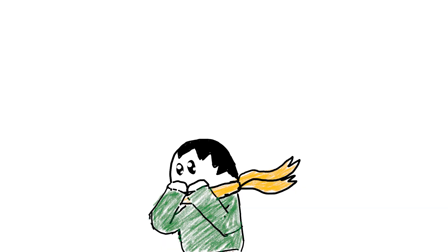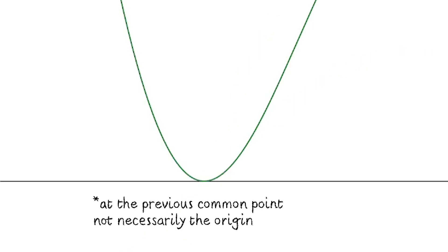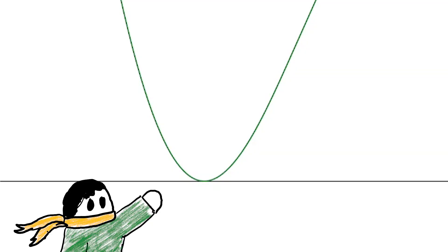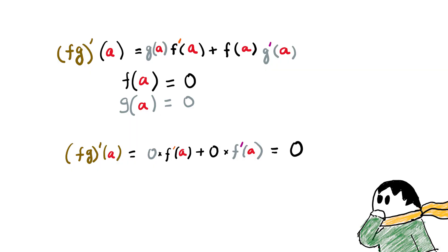To convince you why this is interesting, take any two differentiable functions that pass through zero. Their tangent line slopes could be anything, but the tangent at the origin of their product will always be a flat line, that is the x-axis. I can easily prove this using derivatives, but I was curious if I could prove this using geometry.